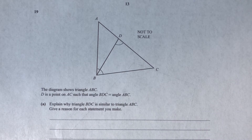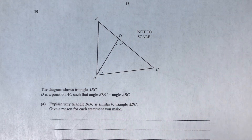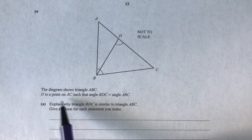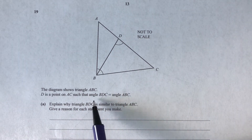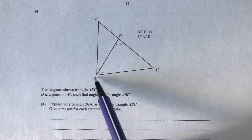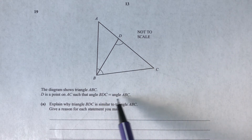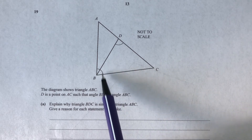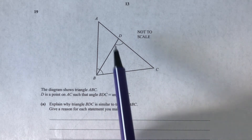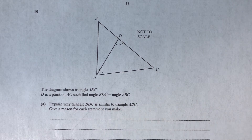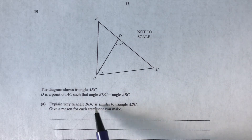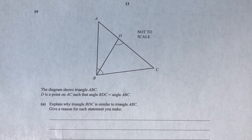Question 19. The diagram shows triangle ABC, and point D is on AC such that angle BDC equals angle ABC. We need to explain why triangle BDC is similar to triangle ABC. One way to prove triangles are similar is by showing they have two angles of the same size.